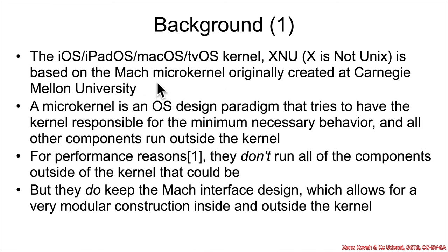A microkernel is an operating system design paradigm where the kernel does as little as possible — major components like file system handling are put out in user space, and the kernel messages and communicates with them back and forth. You can see how that would have security benefits: if the code that handles file system access has a vulnerability, when it's exploited it would be exploited in user space instead of kernel space.